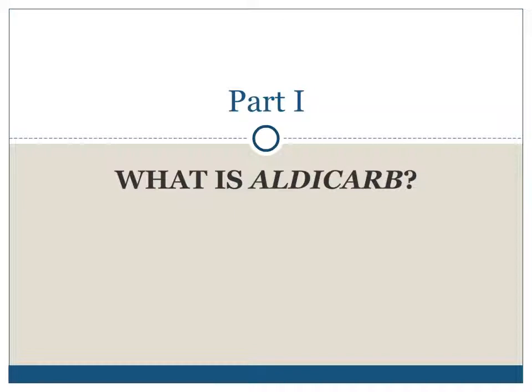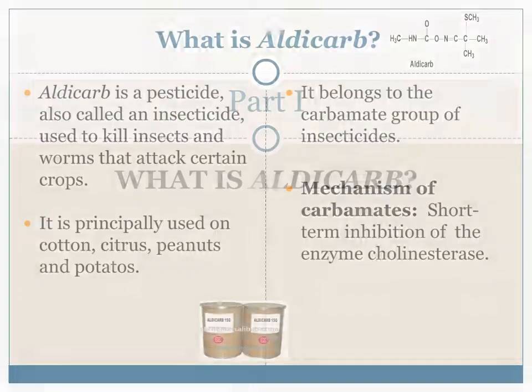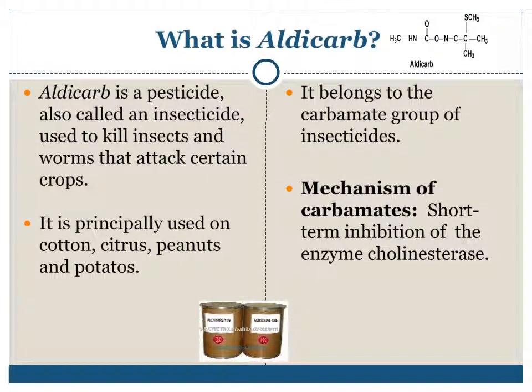What is Aldicarb? Aldicarb is a pesticide, also called an insecticide, used to kill insects and worms that attack certain crops. It is principally used on cotton, citrus, peanuts, and potatoes. It belongs to the carbamate group of insecticides.